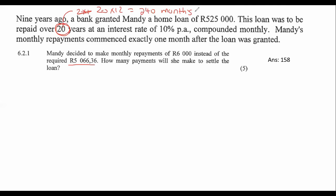But Mandy's feeling ambitious and brave, and she decides she's going to pay 6,000 Rand instead. There is a reason why you would do this in real life — the more you can pay back, the faster you can pay it back, and the less interest the bank will be able to charge you. Now we want to work out how many payments she needs to make to settle the loan.